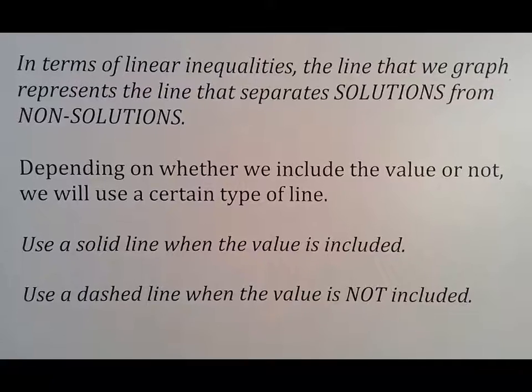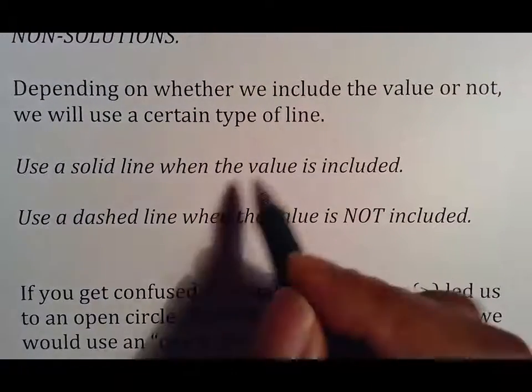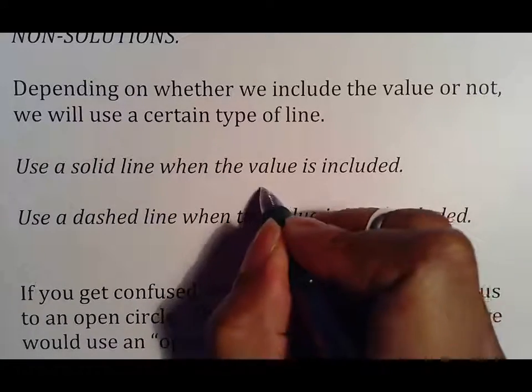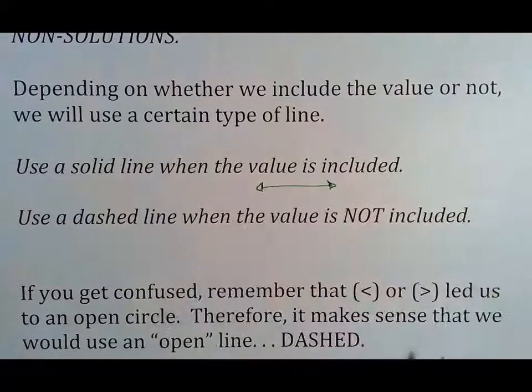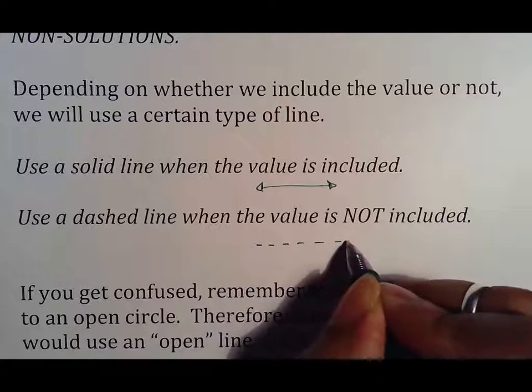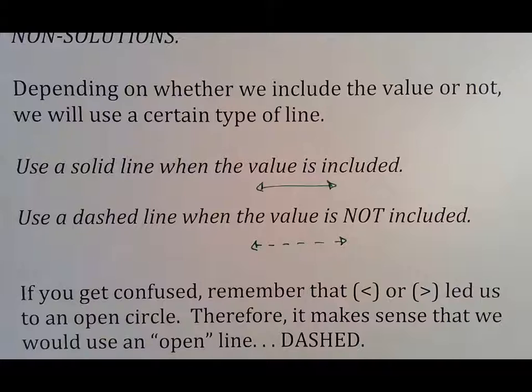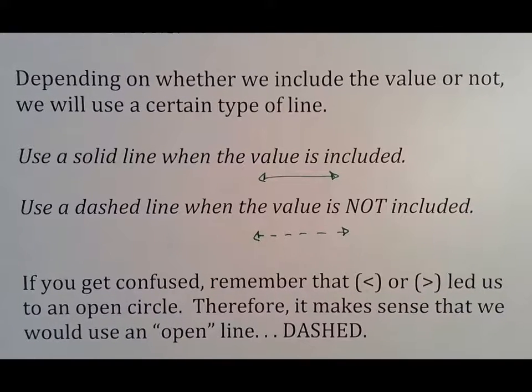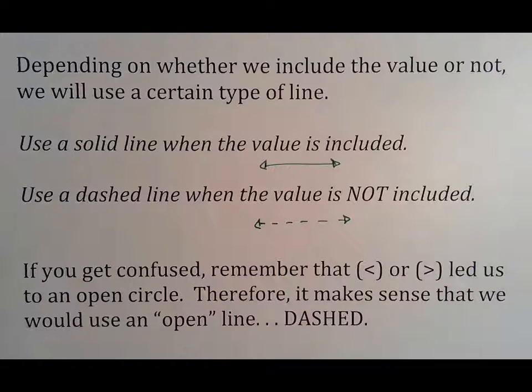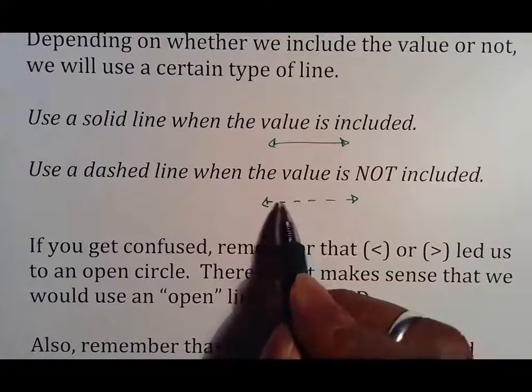Depending on whether we include the value or not, we will use a certain type of line. We will use a solid line when the value is included. Use a dashed line when the value is not included. If you get confused, just remember that the less than, greater than symbols lead us to an open circle. Therefore, it makes sense that we would use an open line, a line with holes in it.